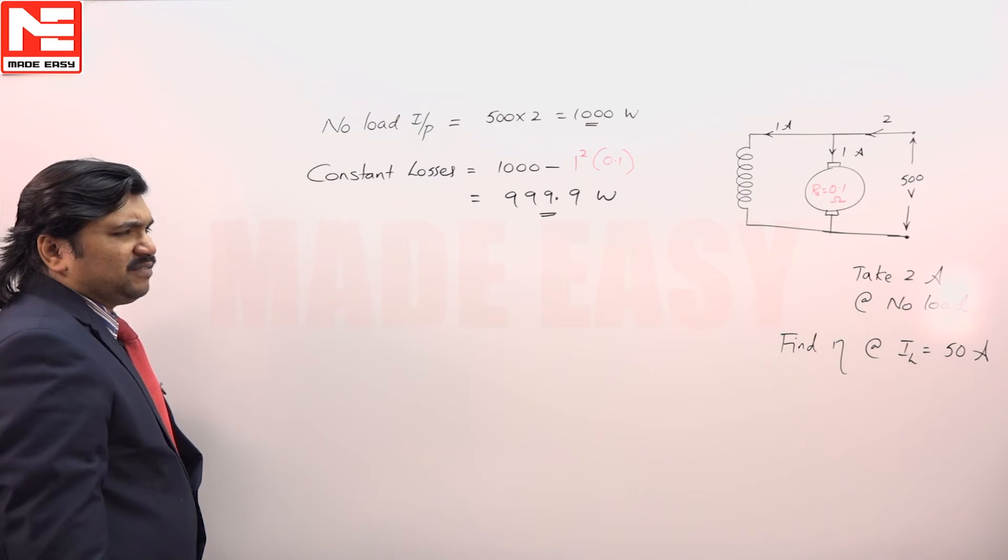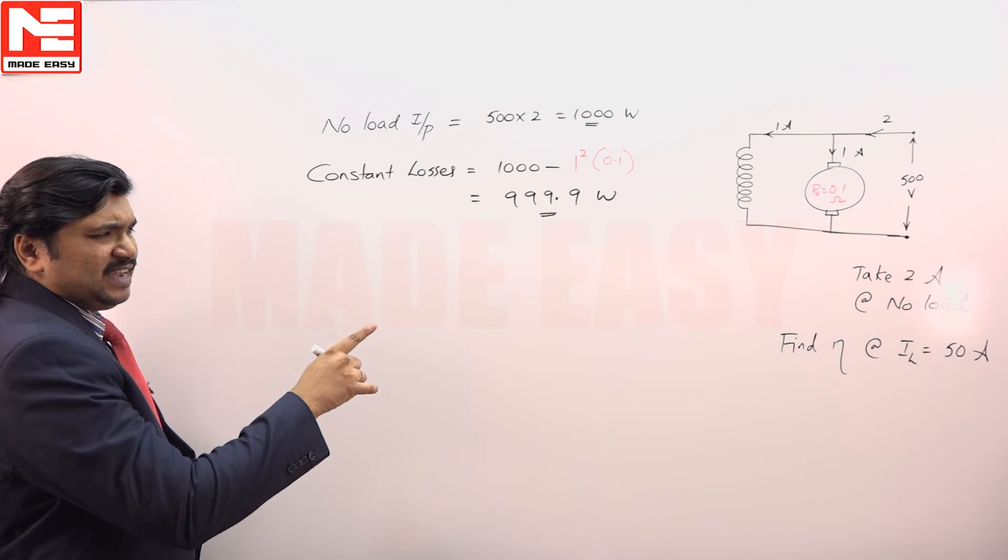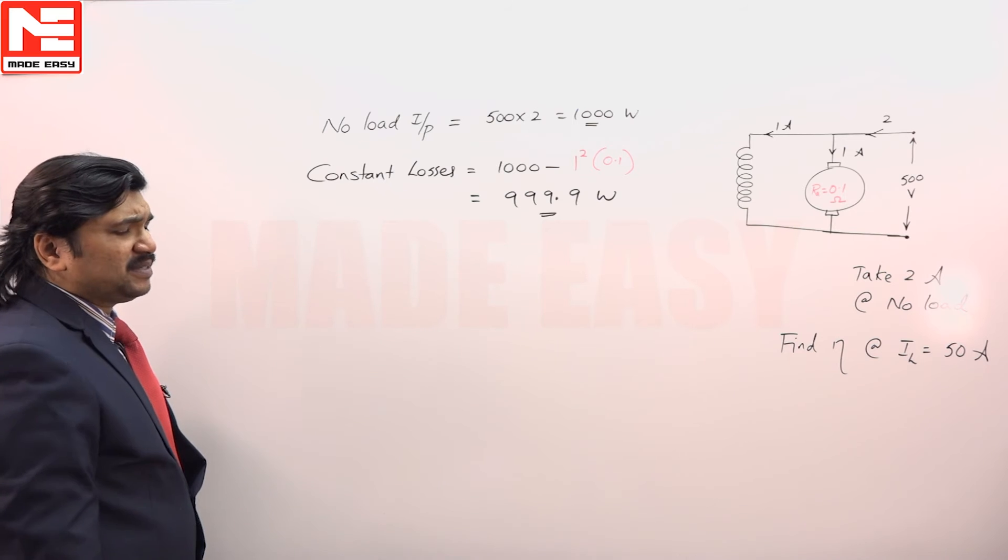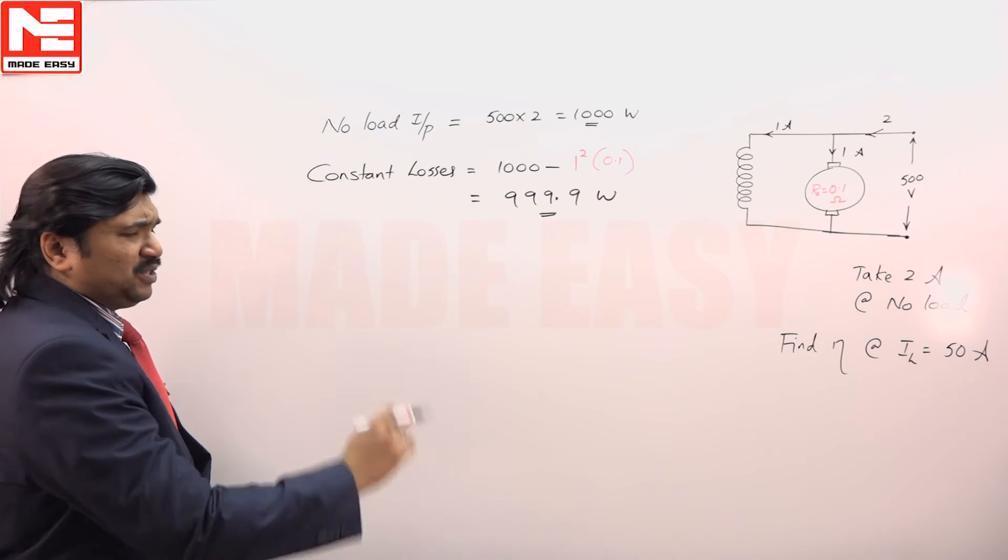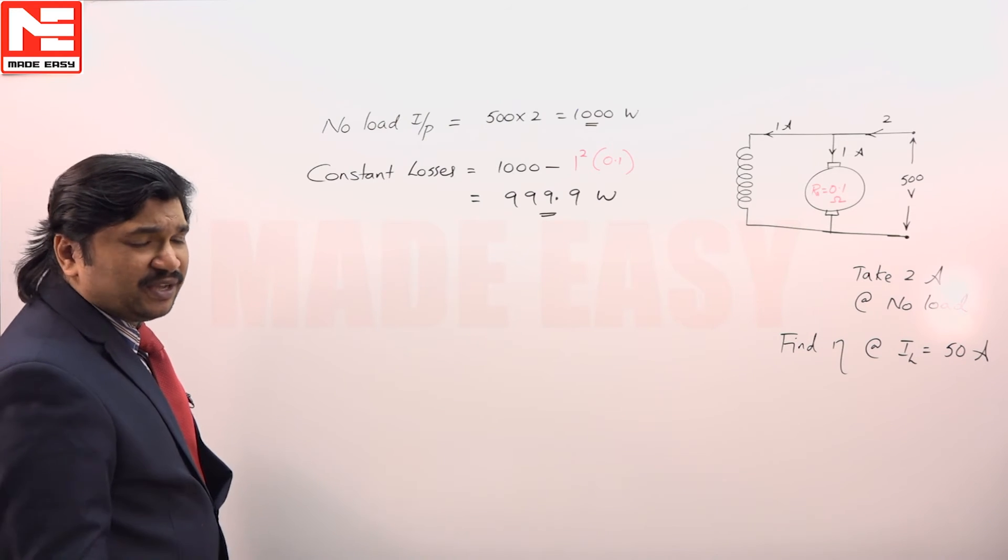Now, it was asked find out efficiency at a current 50 amperes. Constant loss is always a constant loss. Now, what we have to find out is variable losses.